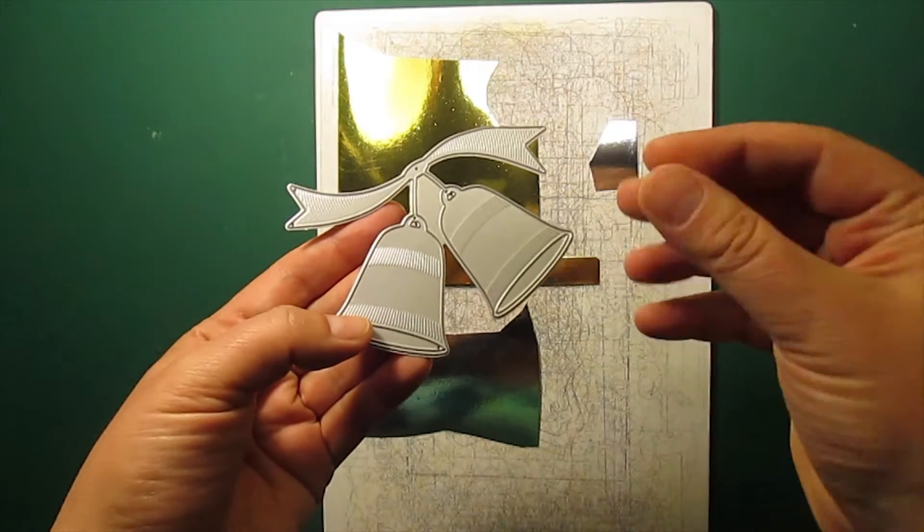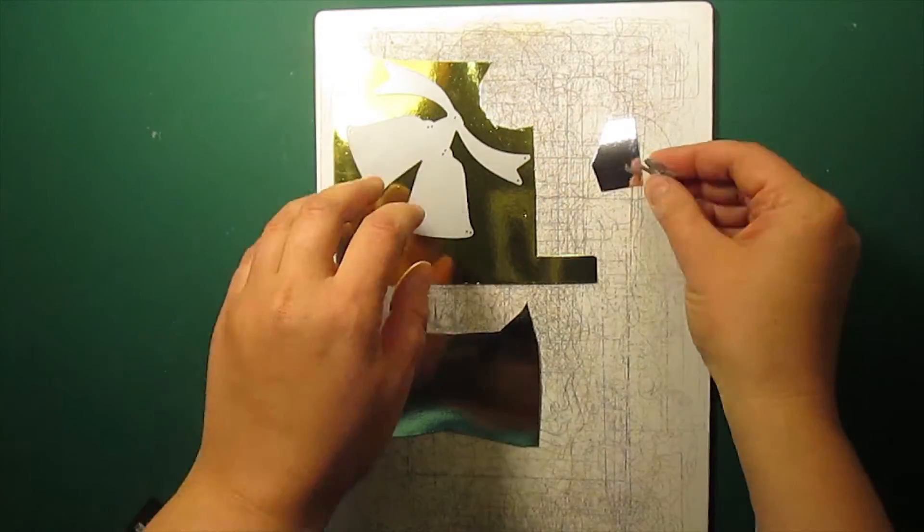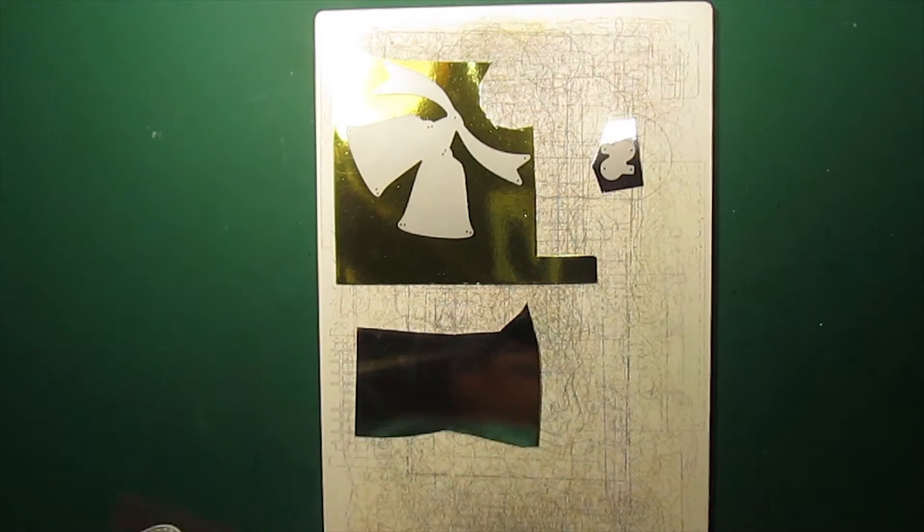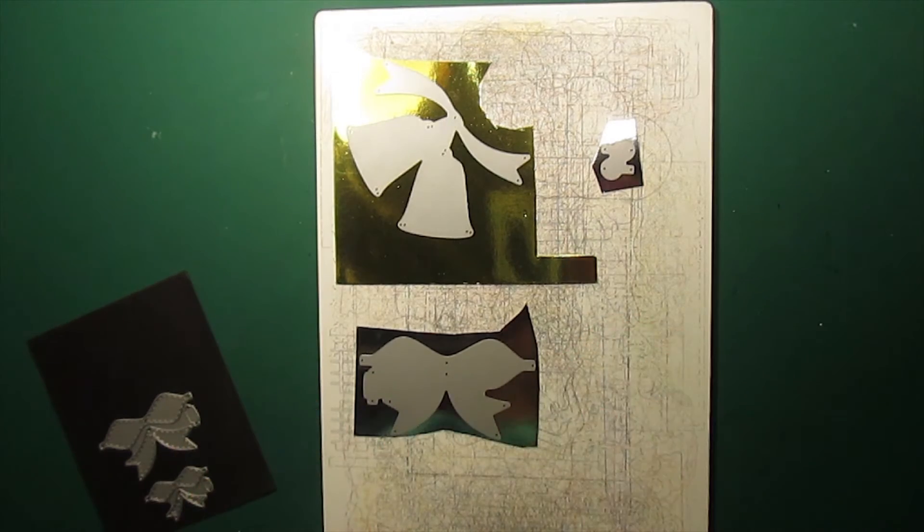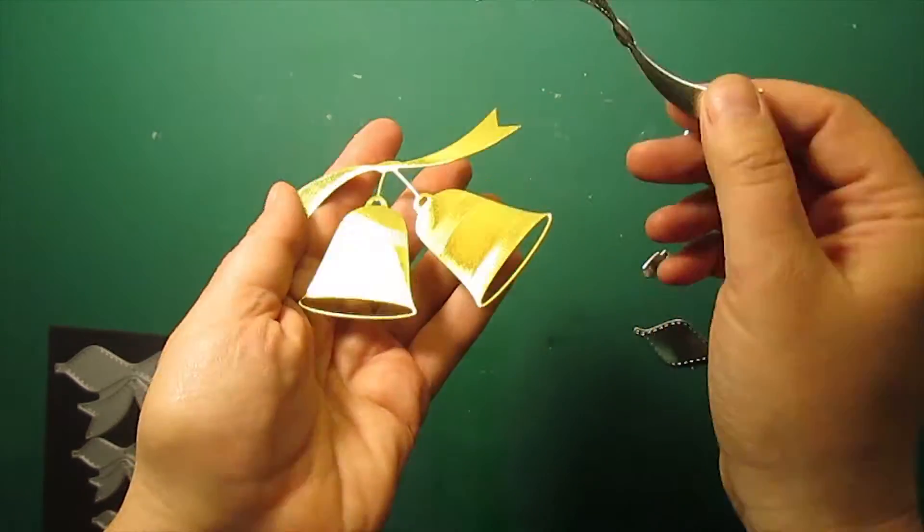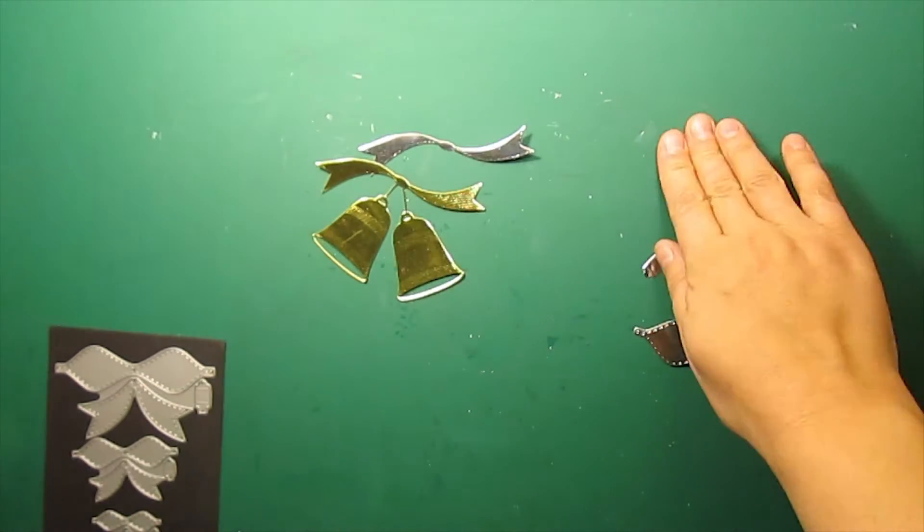For the focal image I'll be die-cutting gleaming bells and the largest bow from the Stitched Bows collection, all by memory box. I'm using gold and silver mirror cardstock to make bells.